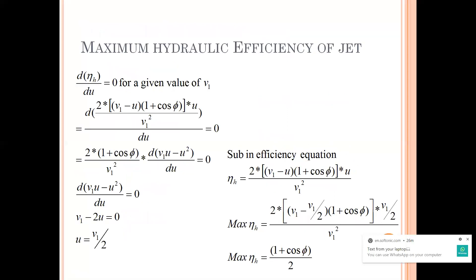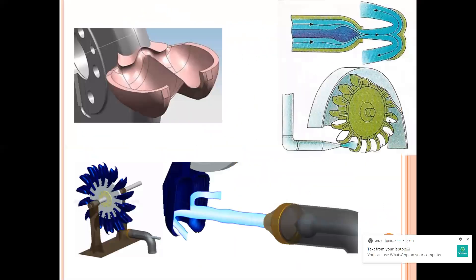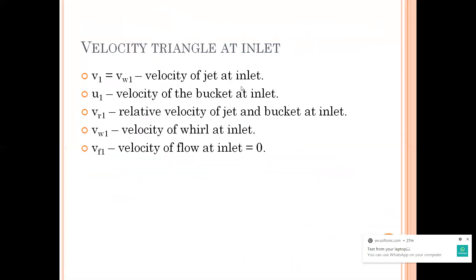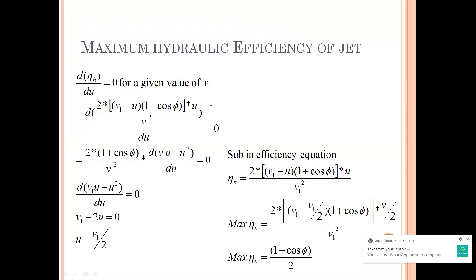Now I want to know what will be the maximum hydraulic efficiency for a given value of v1. For a given velocity of jet — v1 constant — what can be the maximum possible efficiency? My phi is also constant since the bucket shape is almost decided. The angle of deflection is generally 160 to 170 degrees, so it is almost constant. So when finding maximum hydraulic efficiency, v1 is constant and phi is constant.